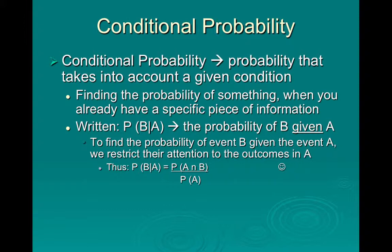So I would say the probability of a senior given AP Calc. To find the probability of event B given event A, we restrict our attention to only the outcomes in A — so again, I would only use AP Calc students. The formula, which you will be given on the test as well as the AP test, is: P(B|A) equals the probability of A and B — so they're in AP Calc and they're a senior — divided by the probability of A, which is just the AP Calc students.